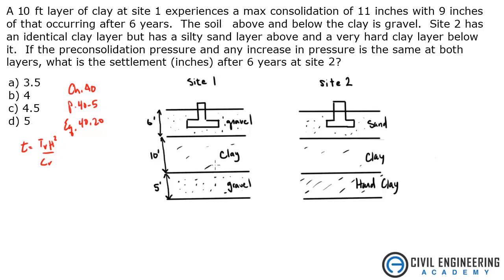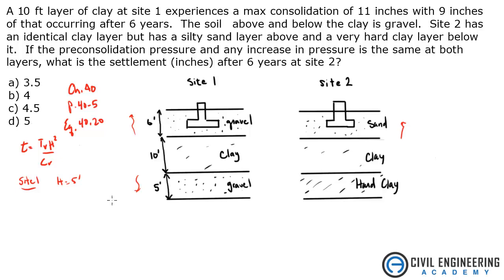I can tell right off the bat that Site 1, because you have gravel above and below, allows for good flow between the layers — so you're going to have double drainage. What that means is h is cut in half, so for Site 1, h = 5 feet. For Site 2, there's a hard clay layer below, so water does not permeate that. It's only going to be draining out of one side — through the sand layer — so h stays at 10 feet: single drainage.